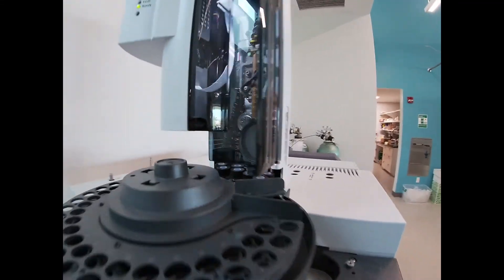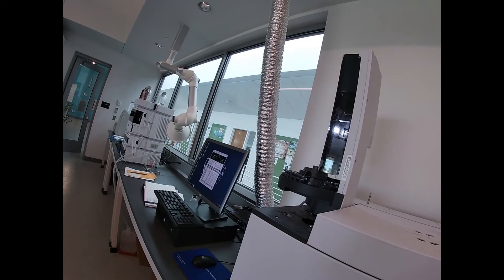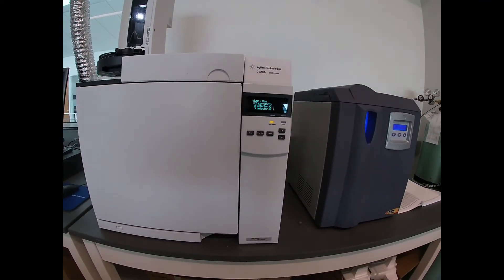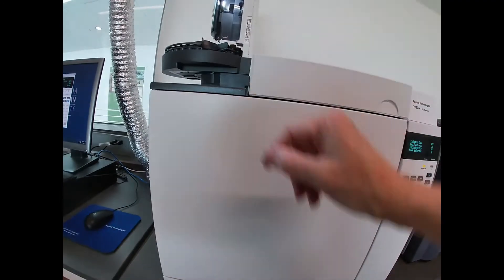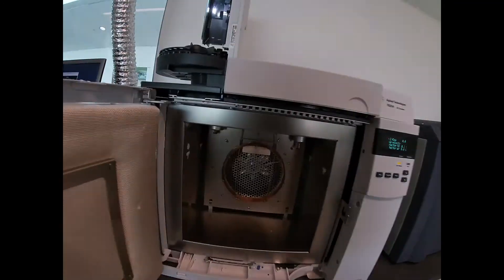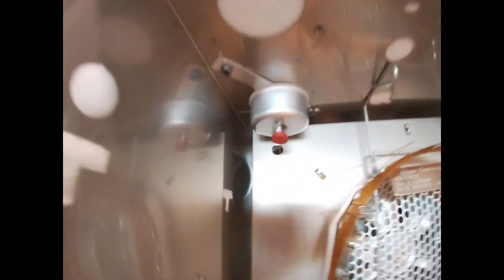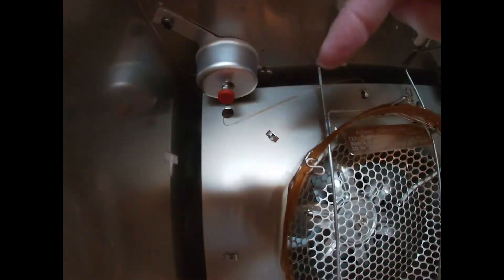Our hydrogen generator hasn't been run for a while so it needs to get back into whack. So again, our sample comes down from our injector, it's mixed with our hydrogen gas, and then it flows through here under our capillary column.